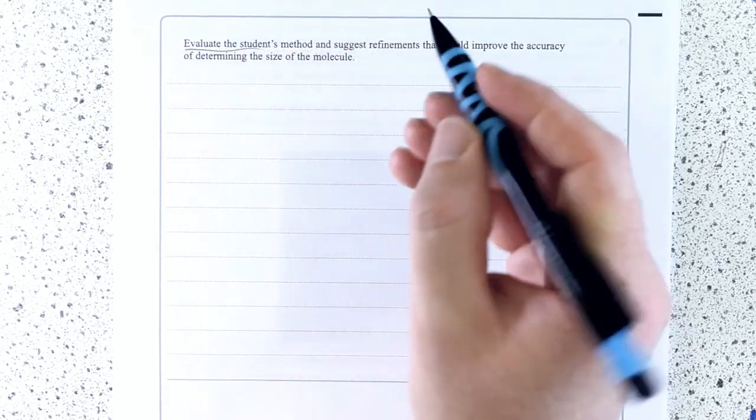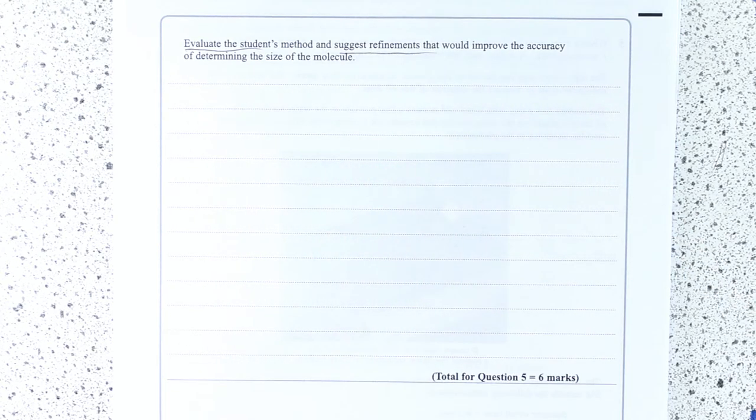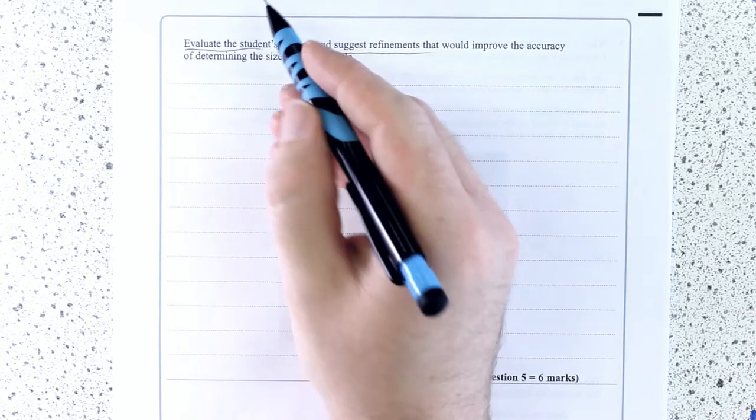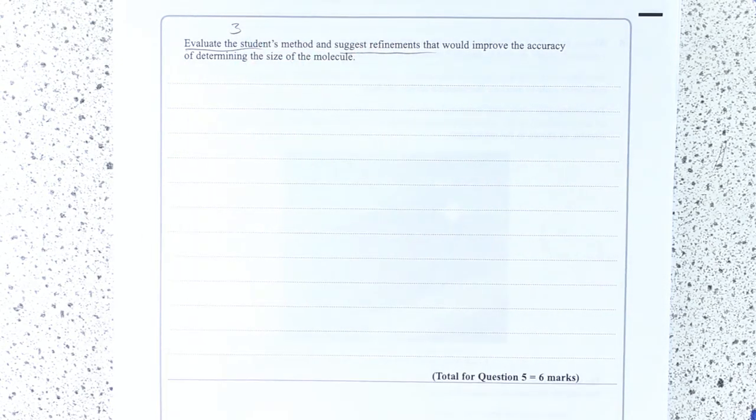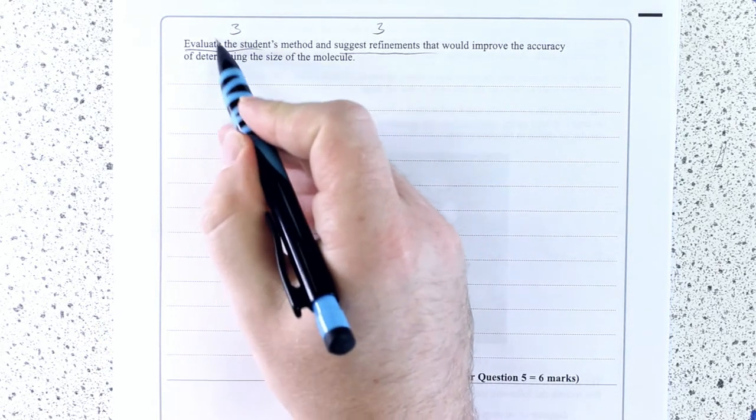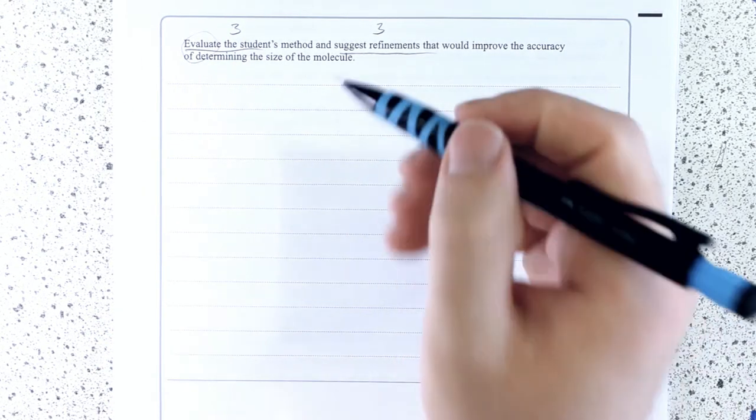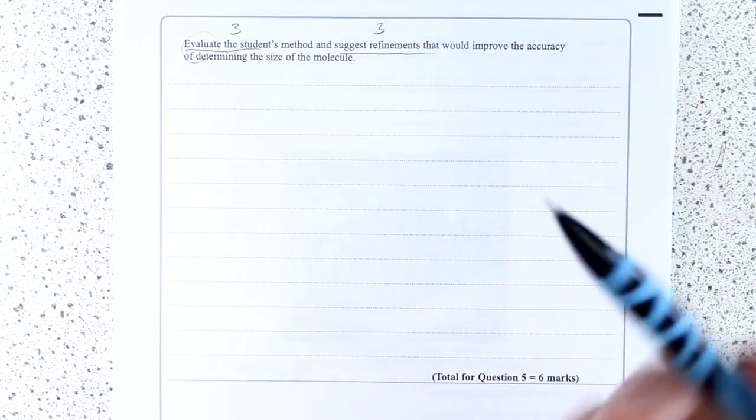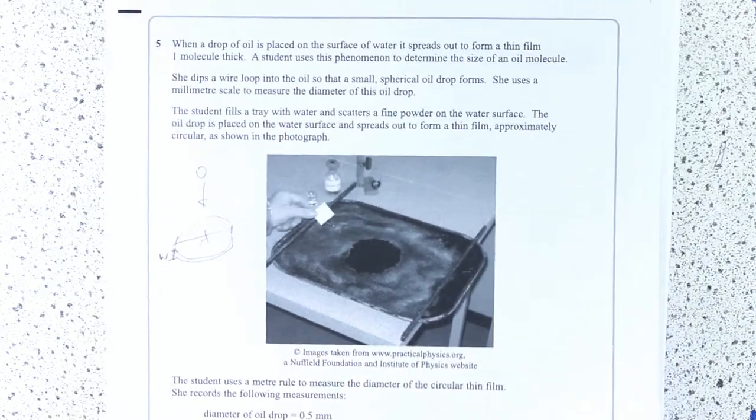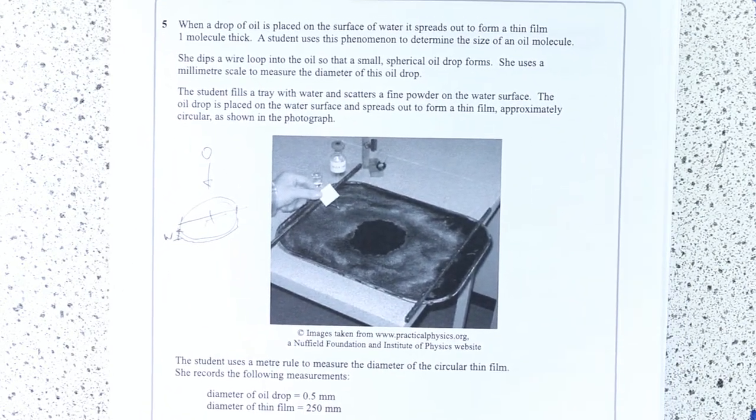So what we have to do is we have to evaluate the student's method and suggest refinements. Right, so there's six possible marks. So, I suggest you're looking for three things that are wrong with the method and three things that you could improve. Why not good things about the student's method? Well, you know, I take that as being evaluated, and yes, it could be, but because they've told you to suggest refinements, that to me suggests they want pairs of things. So, let's look through and think of three things that are wrong, or not as good as they could be.